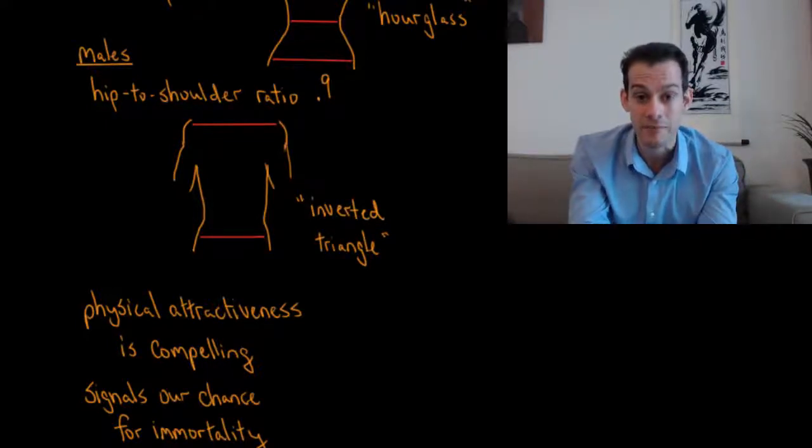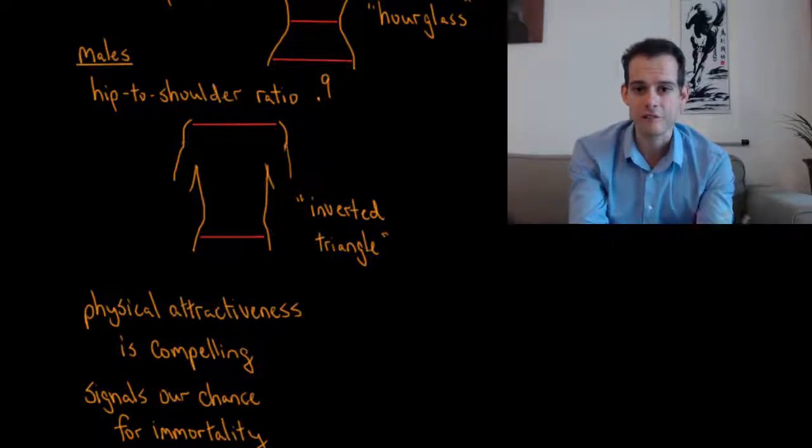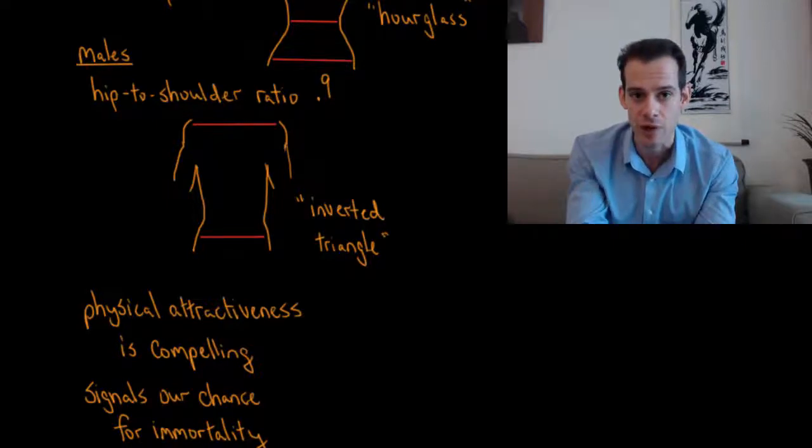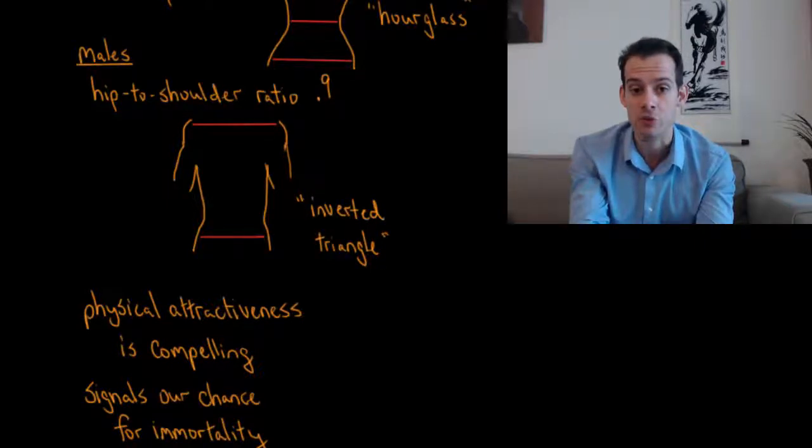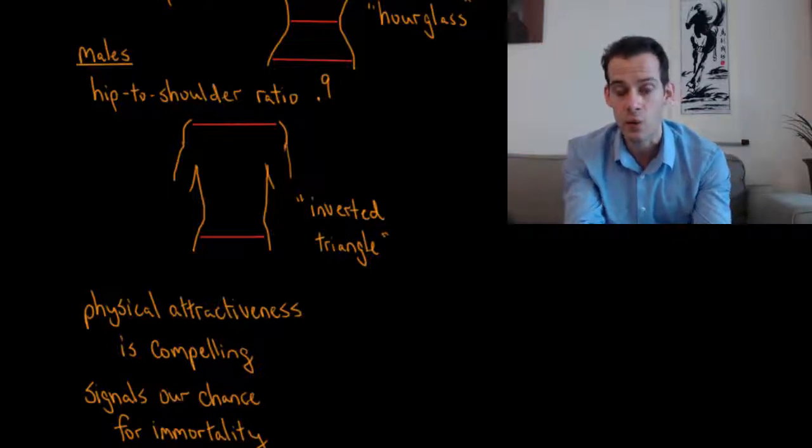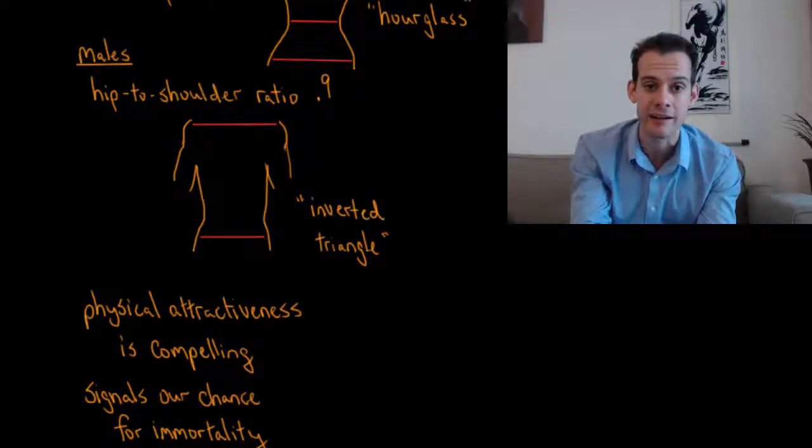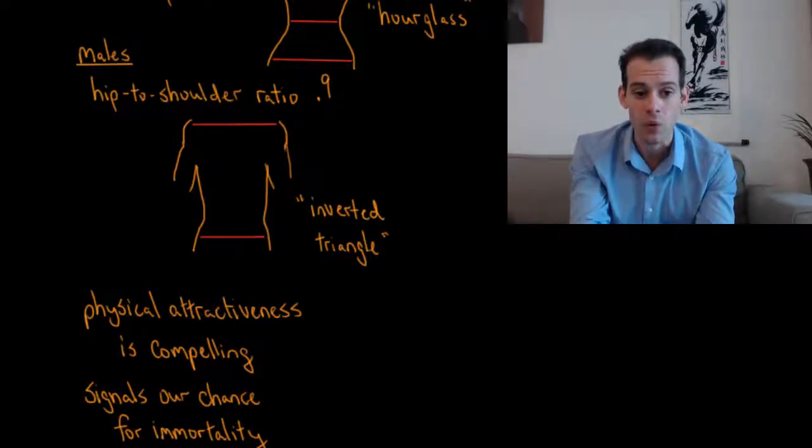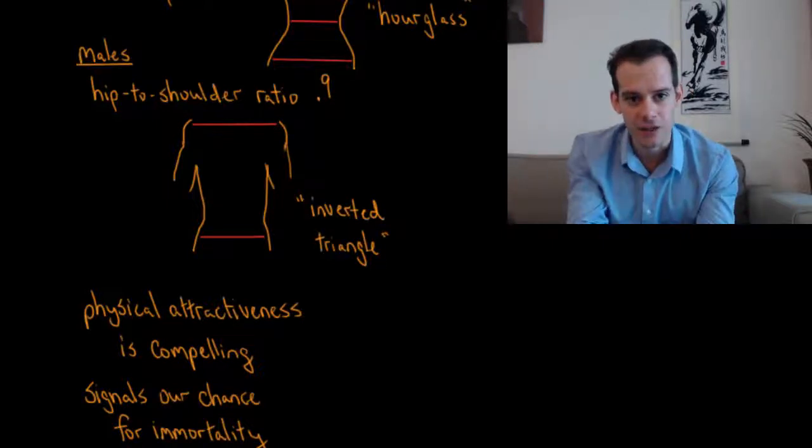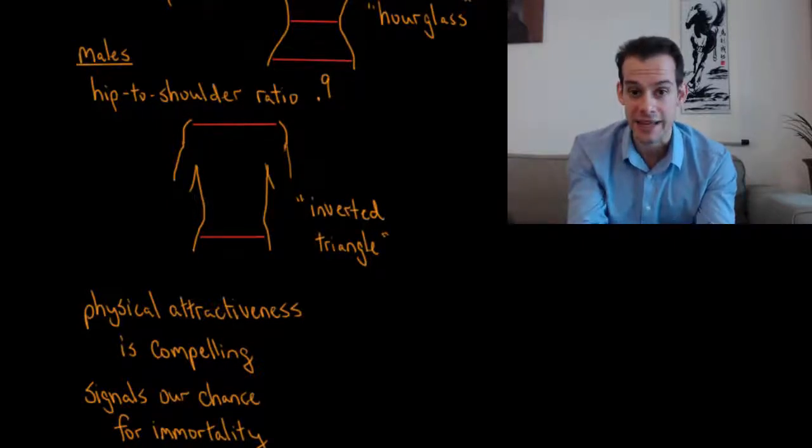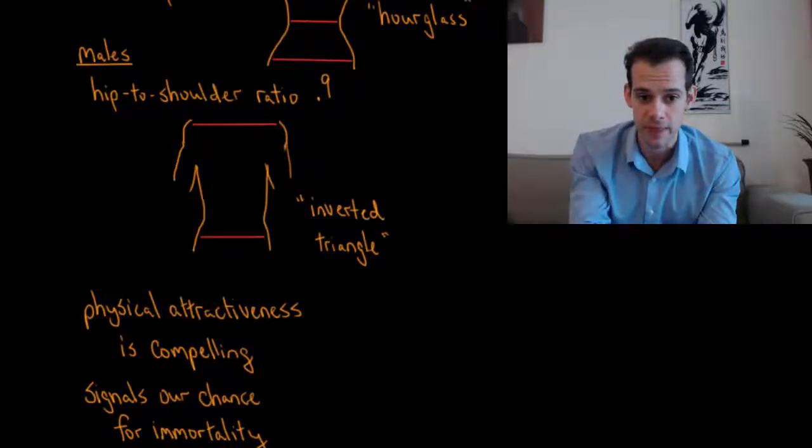Now physical attractiveness is compelling. We feel this strong sense of almost wonder when we see very physically attractive people. And why would this be? Well, if we think about attractiveness as the signs that we could pass on healthy offspring, we can think of somebody who's very physically attractive as representing a chance for our own immortality. Because we want to have offspring who aren't just healthy, but we want offspring who are also attractive. Because that's going to improve their chances of finding a mate as well. And so when we see somebody who's very physically attractive, it's so compelling because it's a way of saying if we could just pass on our genes with this person, then our offspring would have a better chance of being healthy and have a better chance of passing on their genes. And that means our genes could continue for many more generations.